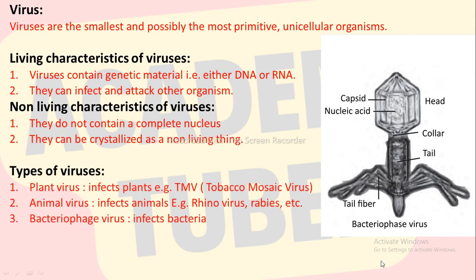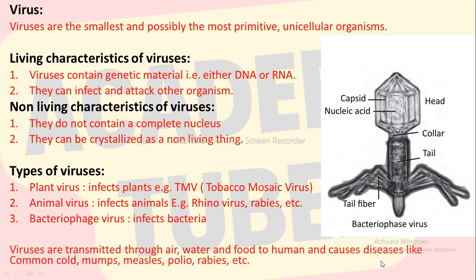Types of viruses. There are three types of viruses on the basis of hosts. The first one is plant virus that infects plants, for example tobacco mosaic virus. The second one is animal virus that infects animals, for example rhino virus, rabies, etc. The third one is bacteriophage virus that infects bacteria. Viruses are transmitted through air, water, and food to humans and cause different diseases like common cold, mumps, measles, polio, rabies, etc.